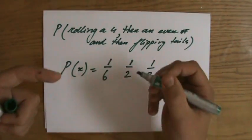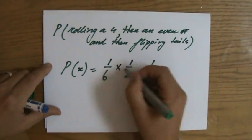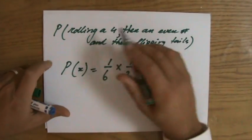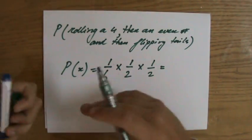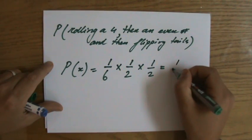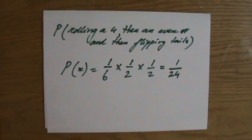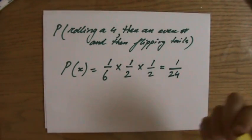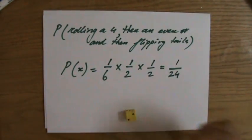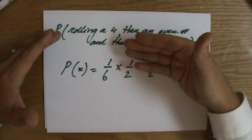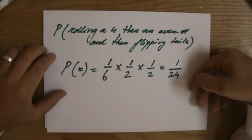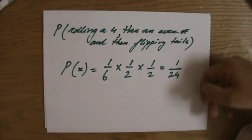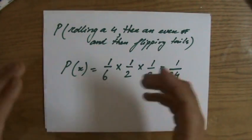Because you have to do all three of them, it's a combined event, so you multiply: one over six times one over two times one over two. It's quite unlikely that that's going to happen — it's actually a chance of one out of 24. So you would expect if you do this 24 times, you're going to roll one four, followed by an even number, followed by flipping tails. Combined events — you multiply those individual probabilities.